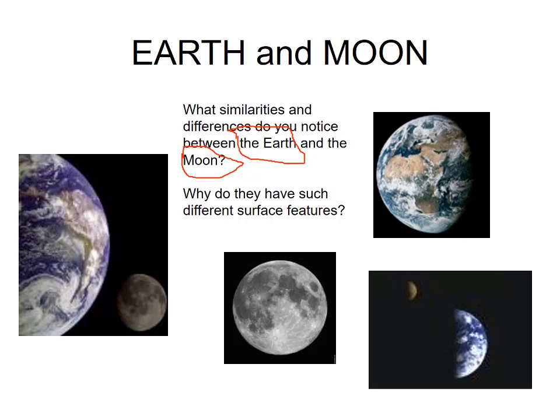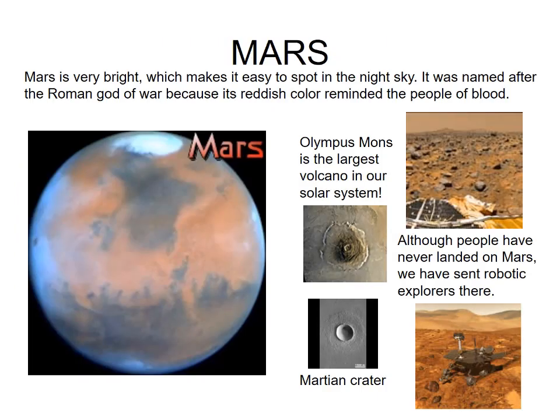Mars is a very interesting planet — it is very bright, making it easy to spot in the night sky. It was named after the god of war because its reddish color reminded people of blood. Mars has a reddish color, and ancient civilizations associated it with the god of war because of that bloody appearance.